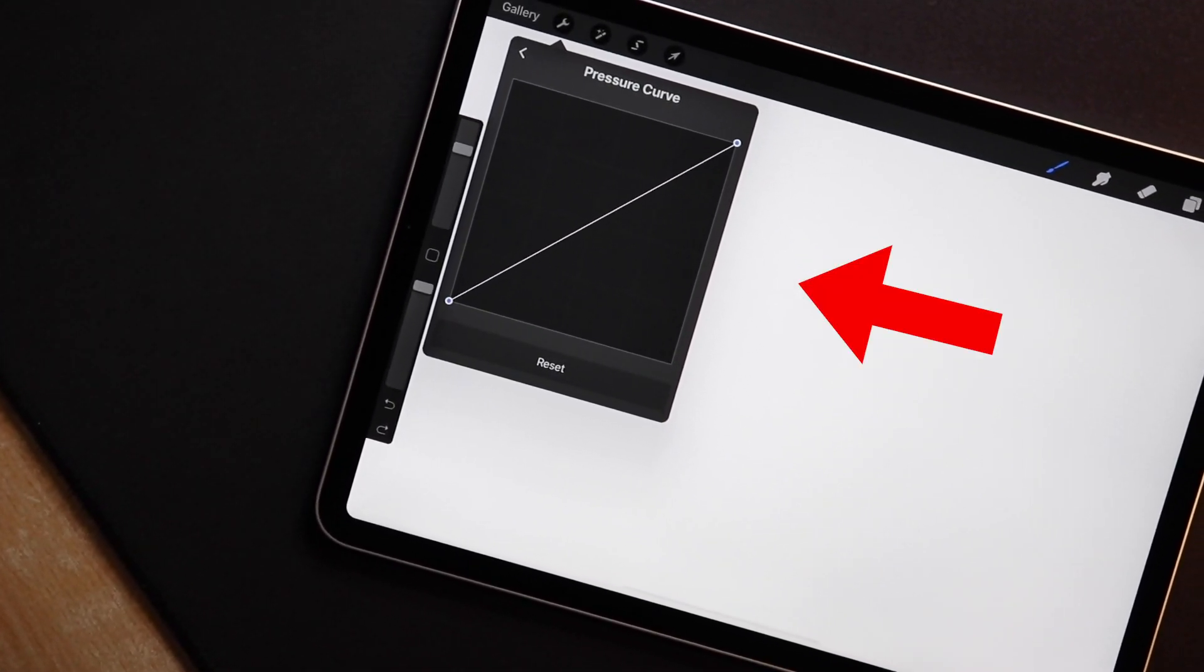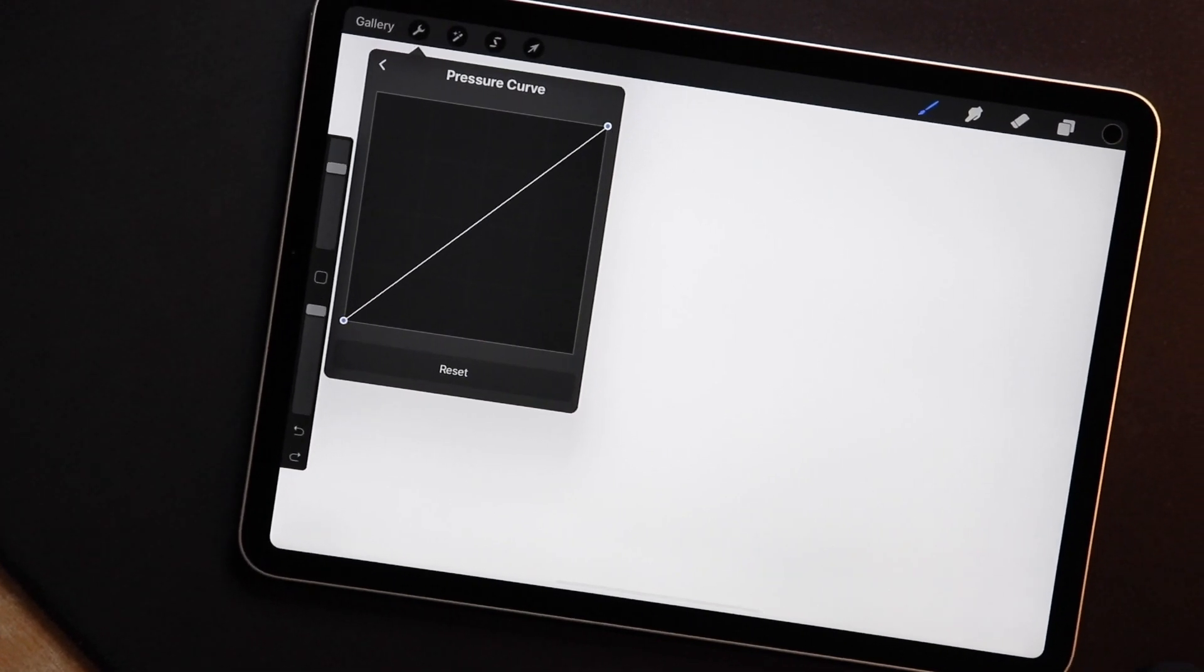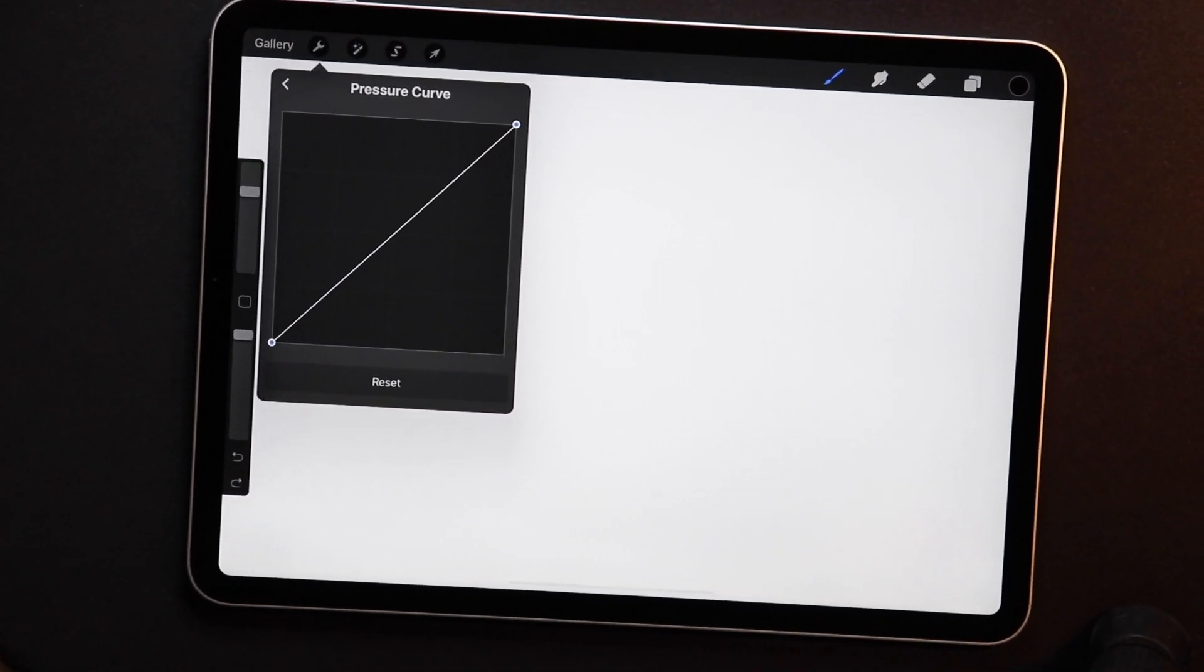Okay, so this is the Procreate pressure curve. It's in my opinion one of the most underrated features in Procreate, and today I'm going to show you exactly how you can adjust it to make your iPad lettering look even better.